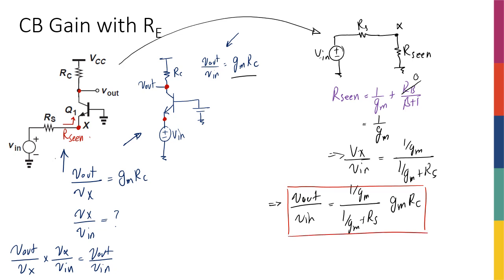I just reduced the circuit to something I knew about — the gain of a simple common base amplifier. It's similar to the gain of a common emitter amplifier, so I only need to remember one expression for two topologies. If there were a resistor at the base, the approach would be exactly the same, except instead of 1/gm I would have 1/gm plus R_base divided by beta plus 1.